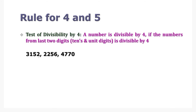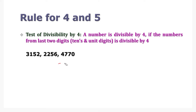Now let's see the divisibility rule for number 4 and number 5. A number is divisible by 4 if the last two digits — in other words the tens and unit digits — are divisible by 4. Let's take 3152. We do not need to care about the thousands and hundreds place. For 3152, the last two digits give us 52. 52 divided by 4 is 13, so 3152 is divisible by 4.